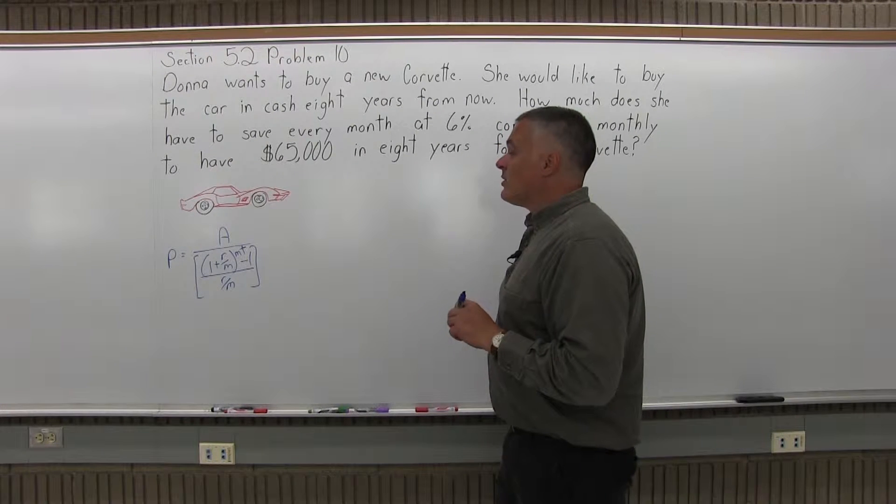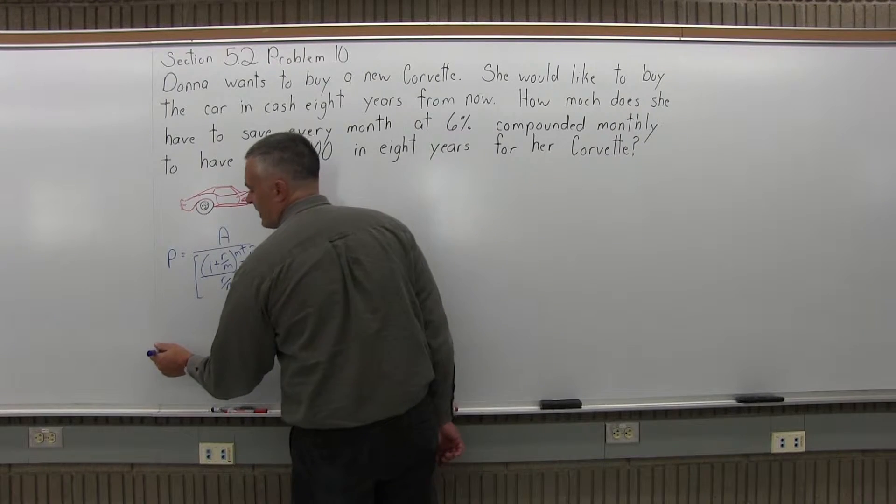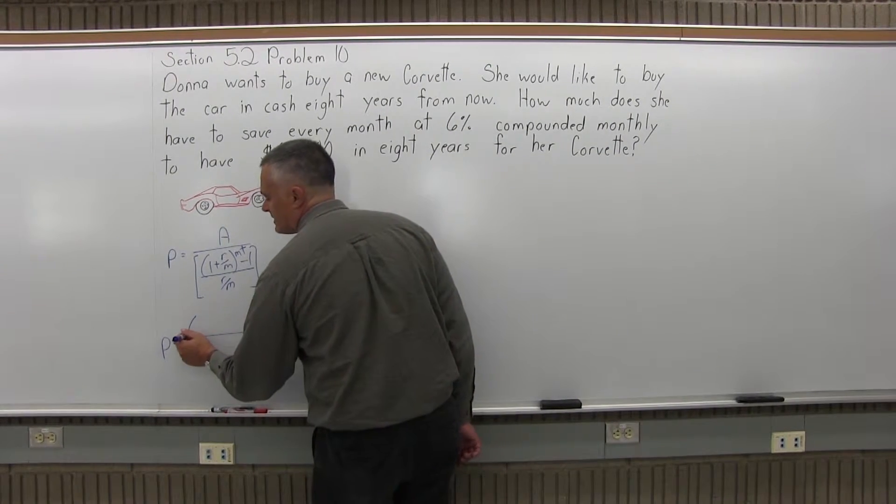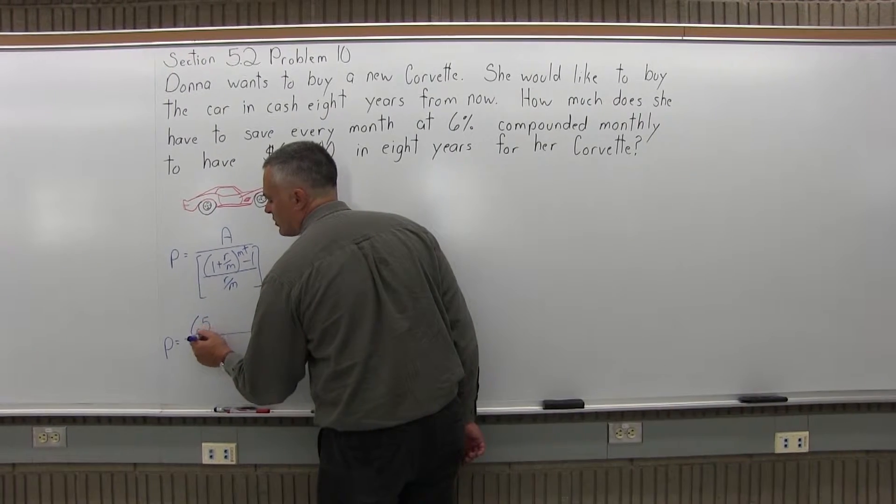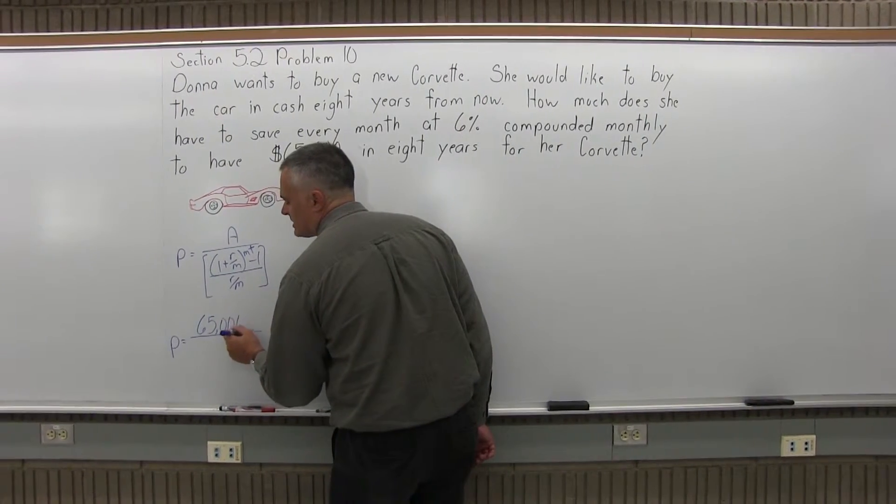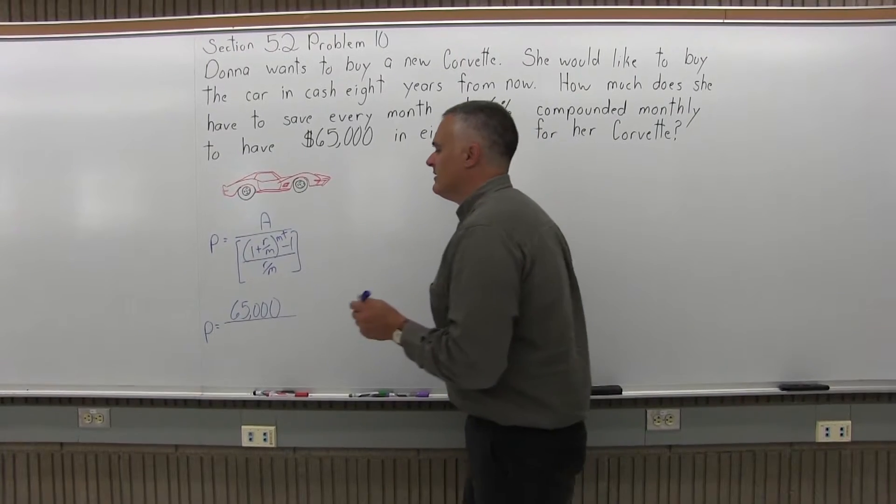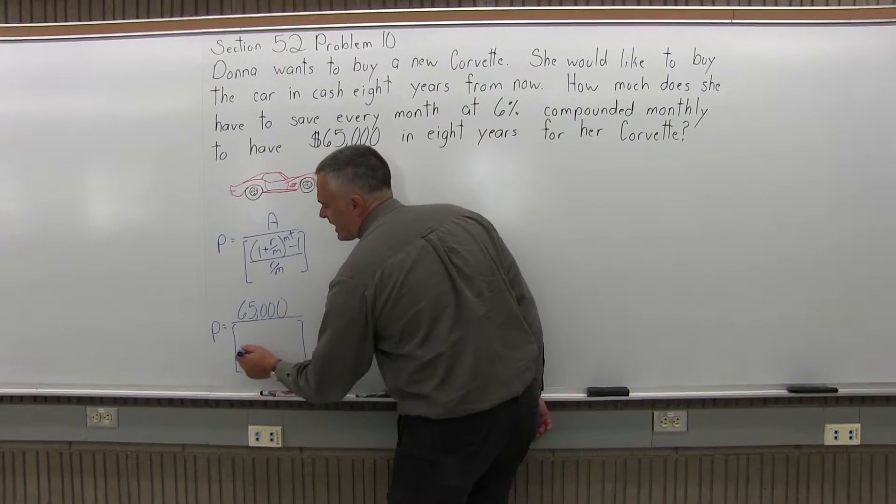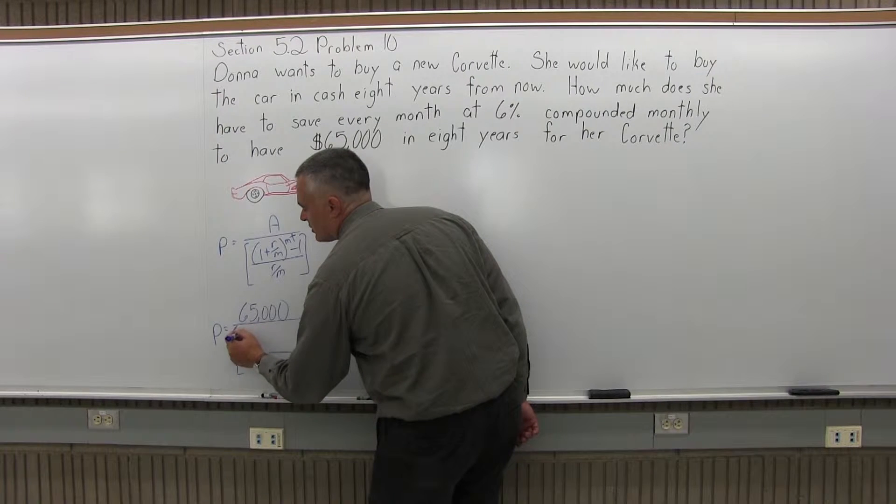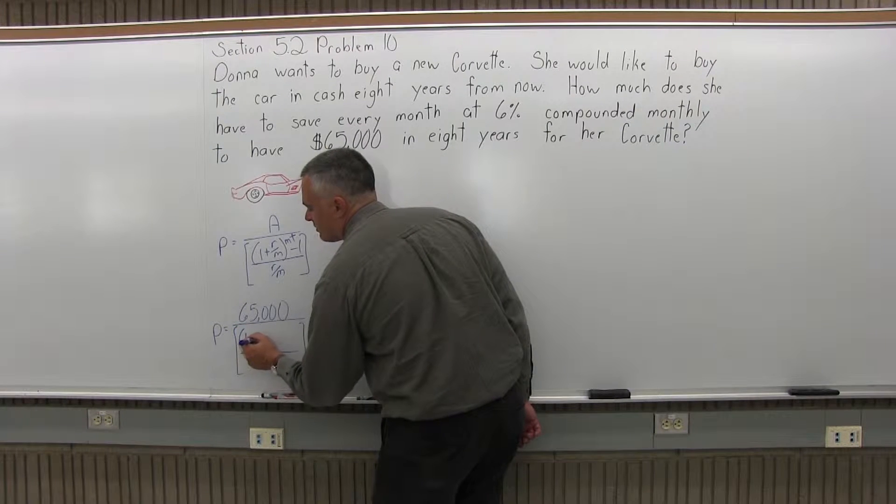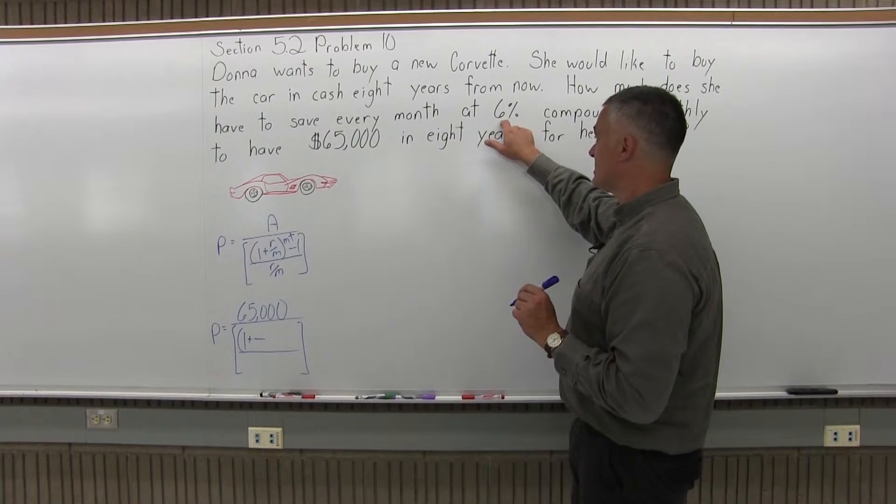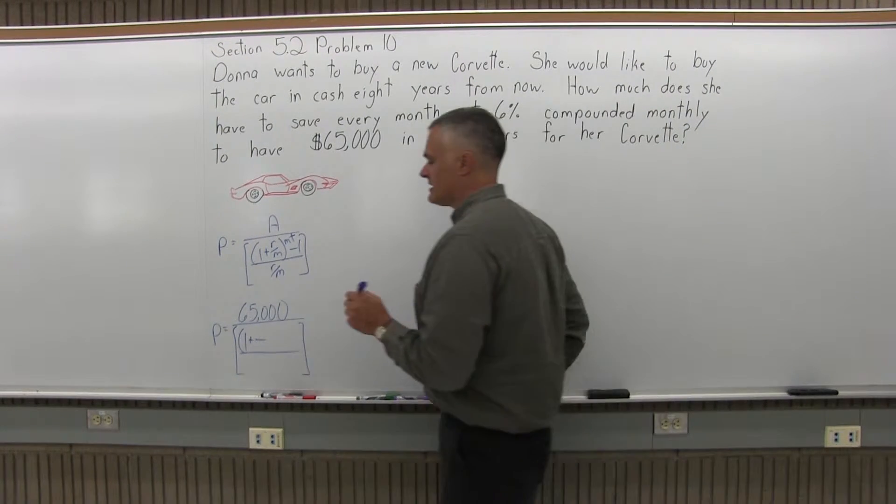So now when we fill this formula in we will have P, the regular payment, equals A, the final amount for this problem, $65,000 which would get you a reasonably nice Corvette. In the numerator of the brackets we have 1 plus R/M. So it will be 1 plus the R, the rate as a decimal for this problem. 6% is the rate, it would be 0.06 as a decimal.